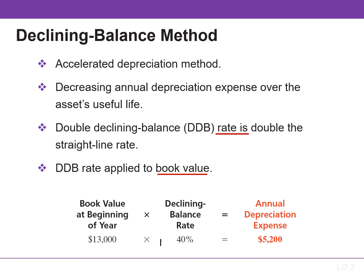The straight-line rate was 20%, so this rate is double, or 40%. You could also take the useful life and divide by two to arrive at the 40%.